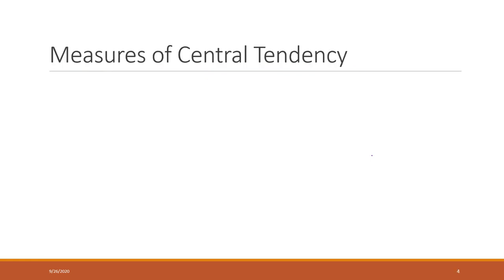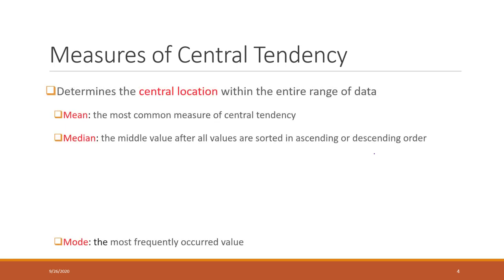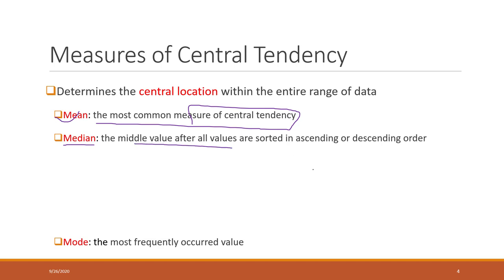Now, measuring central tendency. We normally have three very popular measures: the mean value, which is just the average of all the data values; the median, which is the middle value when you sort values in descending or ascending order; and the mode, which is the most frequently occurring value.